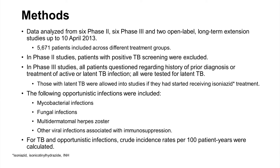In the Phase II studies, patients were screened for TB, and those testing positive were excluded from enrollment. In the Phase III studies, patients were screened, and those with latent TB were allowed entry into the studies if they agreed to start isoniazid and continue an isoniazid course for a full nine months during the conduct of the trial.